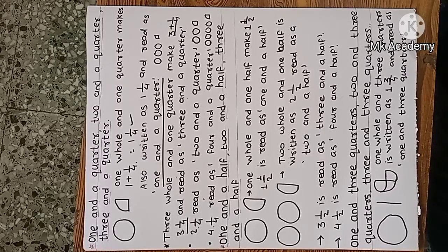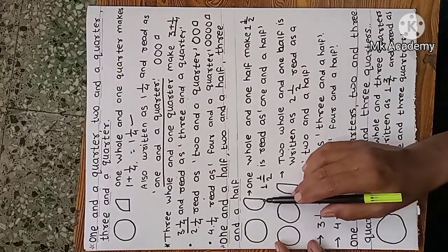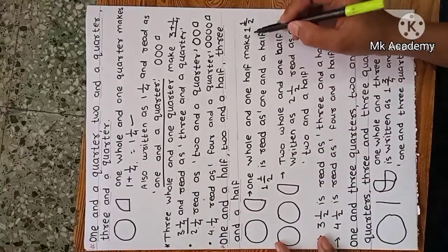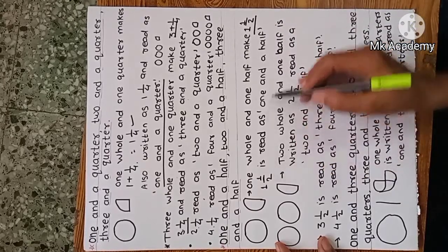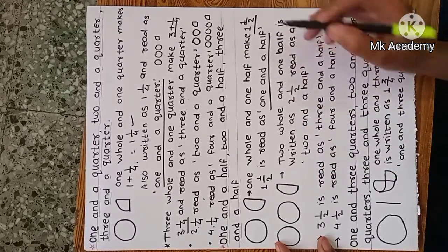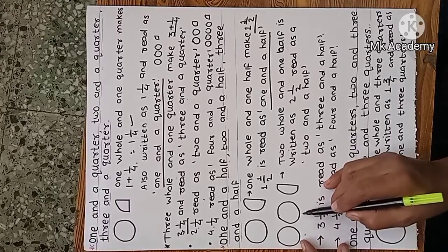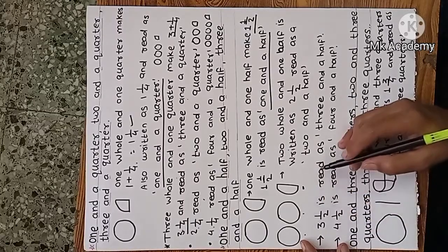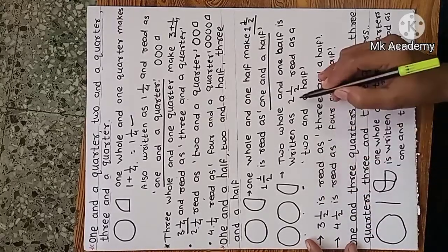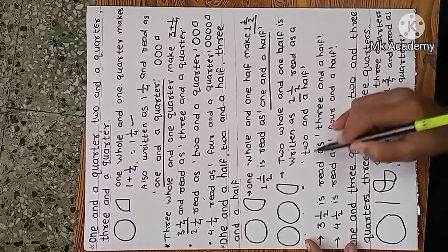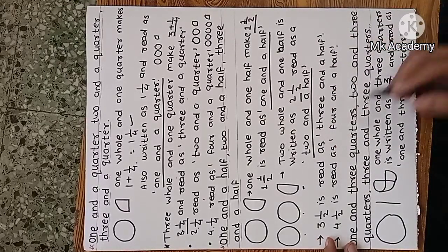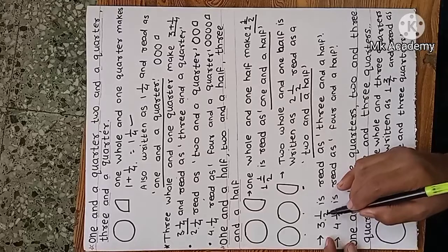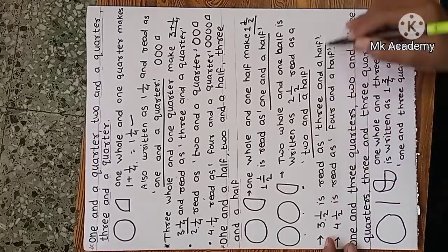Next, one and a half, two and a half, three and a half. One whole and one half makes one and a half. Two wholes and a half is written as two and one-by-two, read as two and a half. Similarly, three and one-by-two is three and a half.